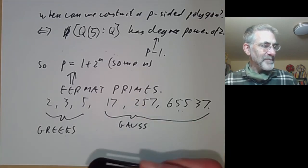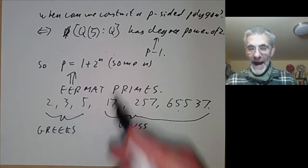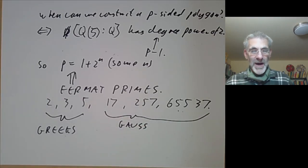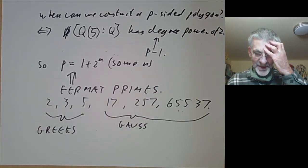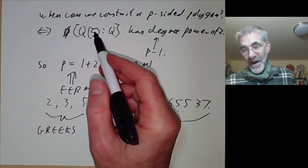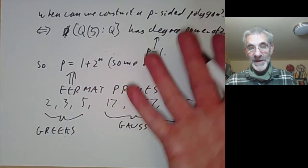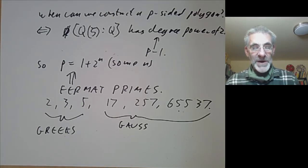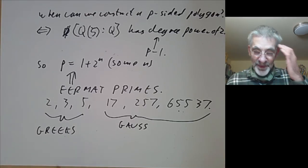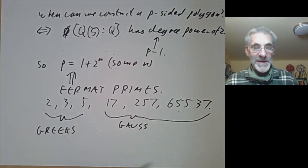So far we have a rather abstract existence proof of a construction. But if you stop and actually try to use this, you'll discover it's not very explicit. We've sort of claimed that we can write zeta in terms of square roots and rational numbers, but how do you actually write it down explicitly? What I'm going to do now is show how we can give an explicit description of zeta in terms of square roots using Galois theory. Let's just do it for p = 17.